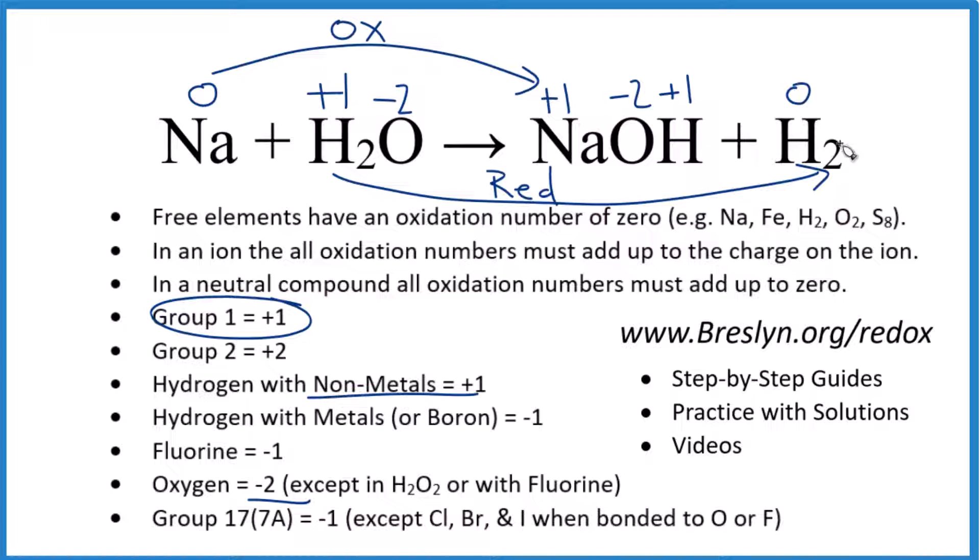So we have reduction, we have oxidation, means we have the transfer of electrons. This is a redox reaction. Na plus H2O yields NaOH plus H2. It's redox because the oxidation numbers changed. If they'd stayed the same then it would not be a redox reaction.